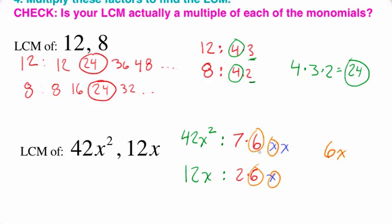But we also need a 7. We need a 7, so we're going to have a 7 times 6. We need a 2, 2 times 7 times 6, and we need another x. I'm going to put a squared here. So our final answer is going to be 7 times 6, which is 42. 42 times 2 is 84x squared.